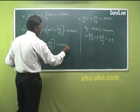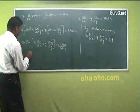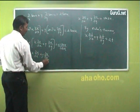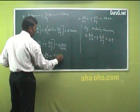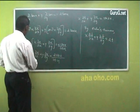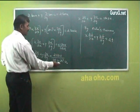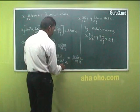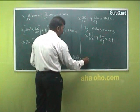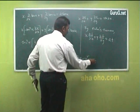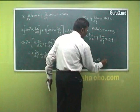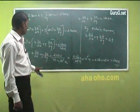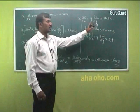So x·∂u/∂x + y·∂u/∂y = 2·tan(u)/sec²(u). Now tan(u) = sin(u)/cos(u) and 1/sec²(u) = cos²(u), so we get 2·(sin(u)/cos(u))·cos²(u) = 2·sin(u)·cos(u) = sin(2u). Therefore x·∂u/∂x + y·∂u/∂y = sin(2u), which is what we had to prove.